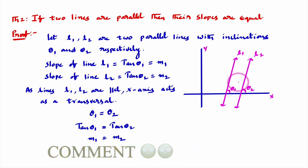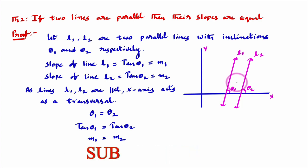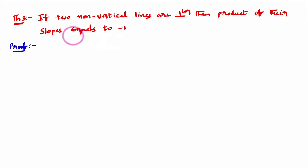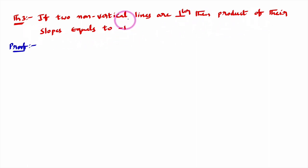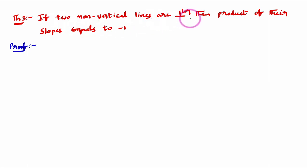We have one more result: if two lines are perpendicular, then the product of their slopes is minus 1. The theorem states: if two non-vertical lines are perpendicular, then the product of their slopes equals minus 1. I'll discuss the 'non-vertical' qualifier at the end. For now, remember: if two lines are perpendicular, then the product of their slopes equals minus 1. I'm going to prove this result.